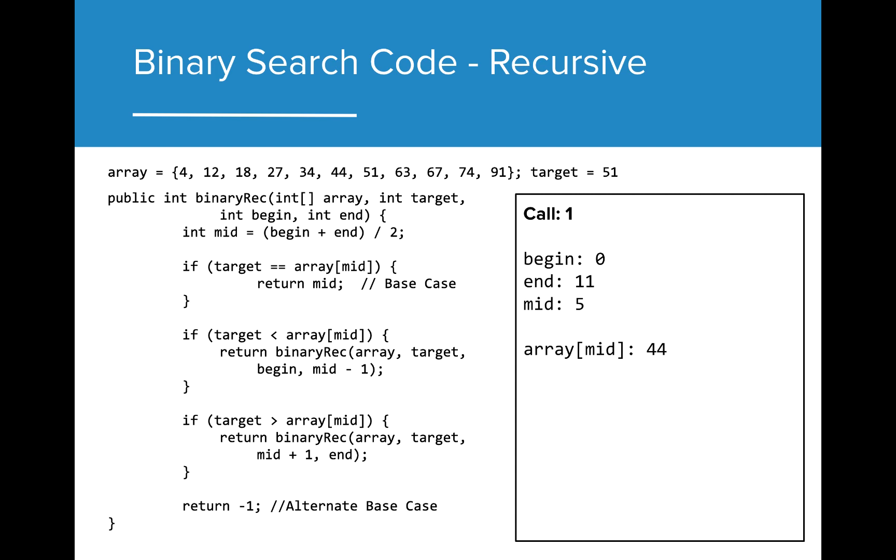The biggest change at the start of this code is that we are passing the beginning and ending values in our method. From there, we can calculate the midpoint the same way as before. Our base case is when we find our value. For this first iteration, we skip the base case and use the recursive call.